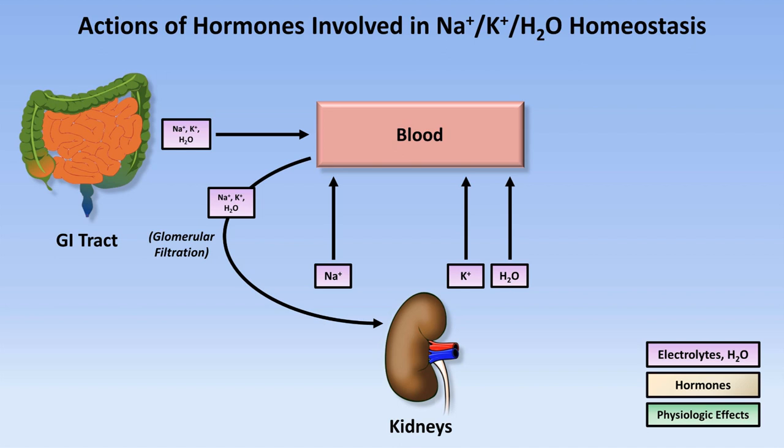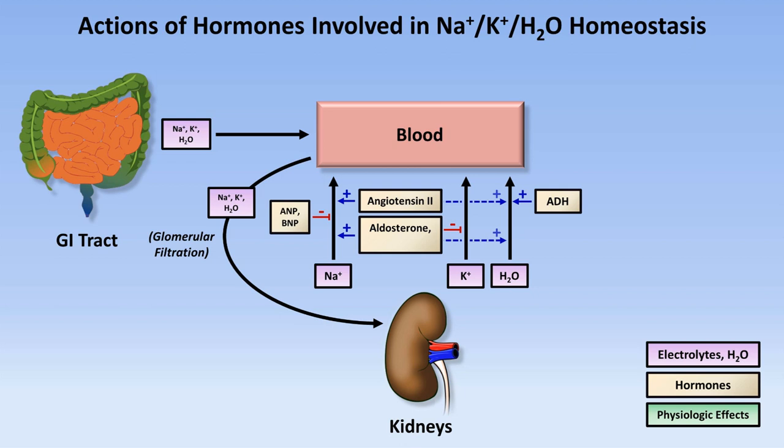Angiotensin-2 and aldosterone both directly stimulate reabsorption of sodium and indirectly the reabsorption of water. Aldosterone prevents reabsorption of potassium. ADH strongly encourages reabsorption of water without directly affecting reabsorption of the others. And ANP and BNP block reabsorption of sodium and thus indirectly prevent reabsorption of water. In other words, ANP and BNP antagonize the RAA axis and ADH as part of the checks and balances to prevent excessive reabsorption and excessive volume expansion.